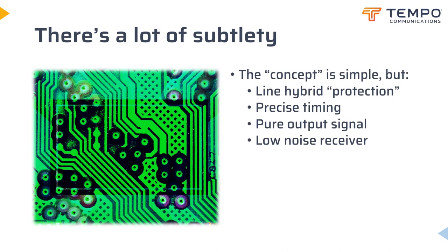A time domain reflectometer applies a signal to the cable under test and looks for reflections. If the cable's trace is good and uniform from start to finish and the end is terminated correctly, you will see virtually nothing — all the energy input is delivered to the load and dissipated there. You can build a basic TDR by hooking up a signal generator and an oscilloscope with some timing hardware, a line hybrid, and a matching network. But to optimize things, it's best to integrate the electronics so that the timing of the signal generator and receiver are very closely aligned, and you can also optimize coupling through the line interface hybrid and matching network, which also becomes important for protecting the unit from accidental connection to signals such as AC power found on some CATV systems.